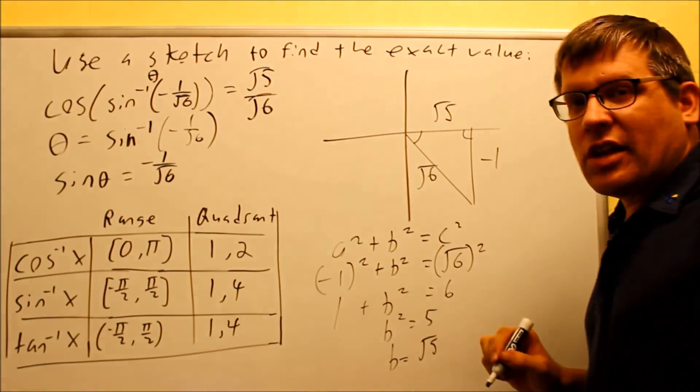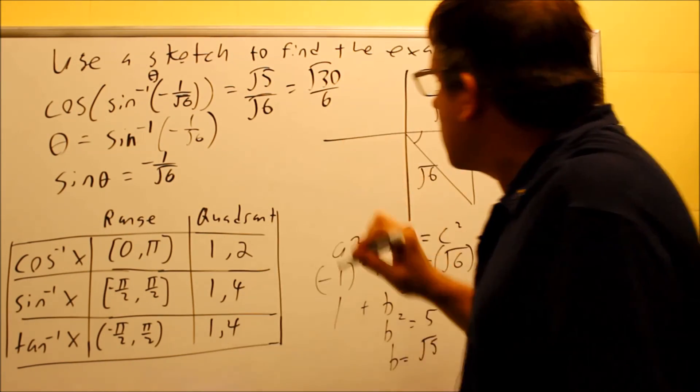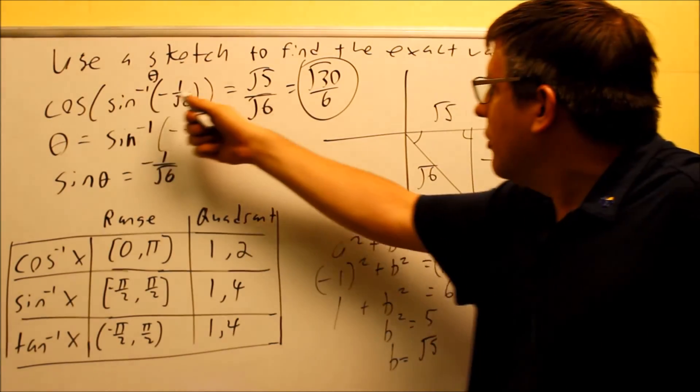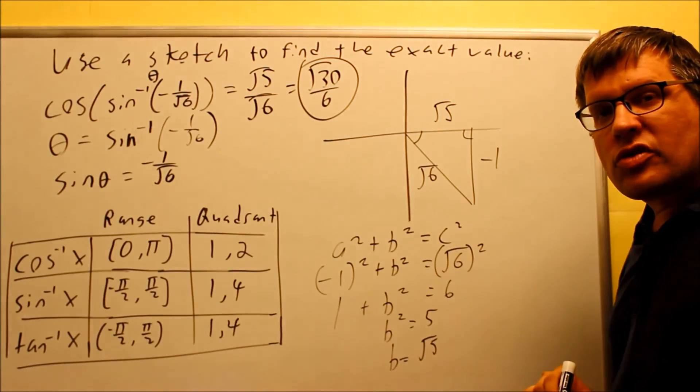And so if I take that and I rationalize it, multiplying top and bottom by radical 6, I'll get my final answer. So the answer for the whole entire problem, the exact value for this, is going to be square root of 30 over 6.